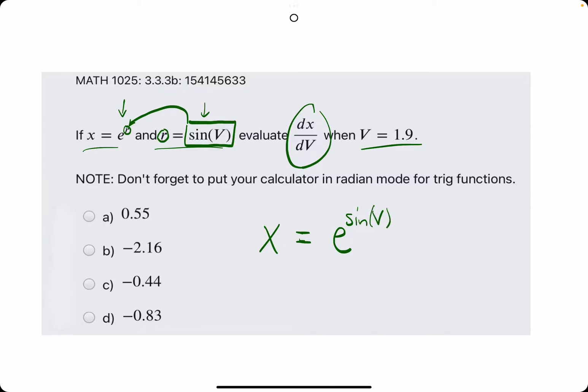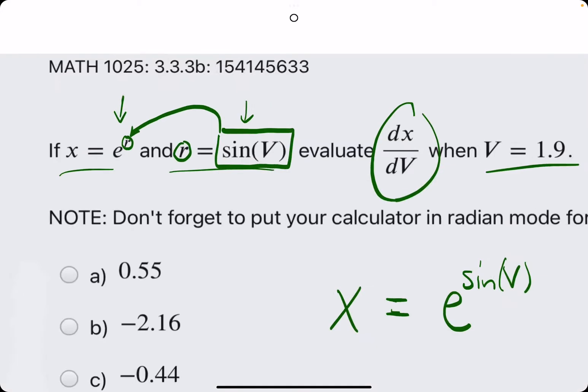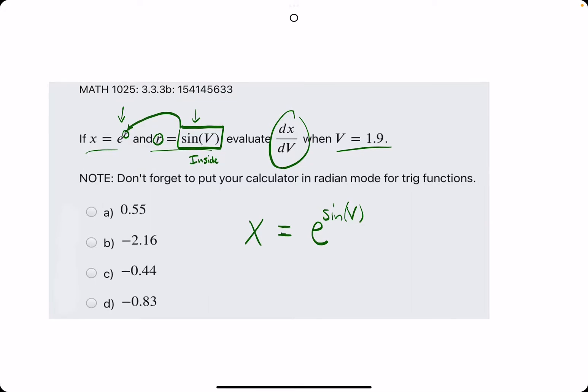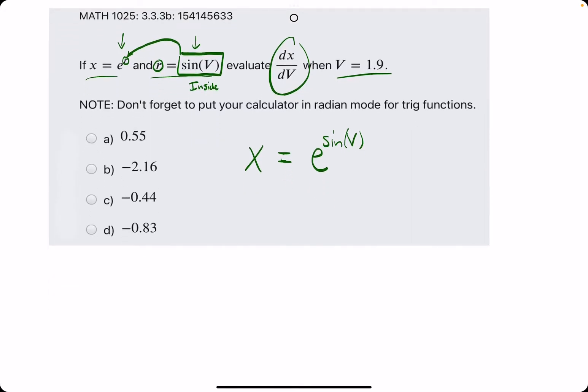Because we plugged one function into the other, this function r that we plugged into the other function naturally becomes our inside function, which makes e to the r, basically, our outside function.